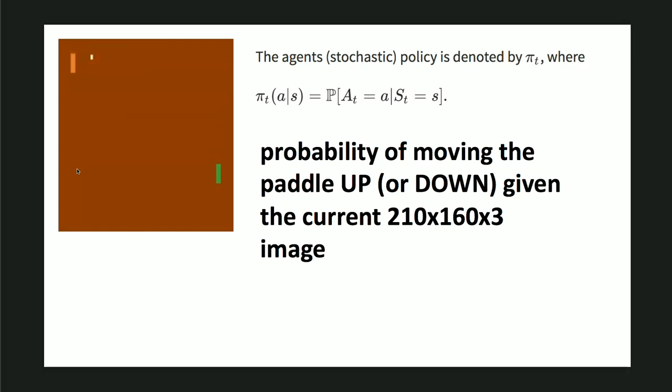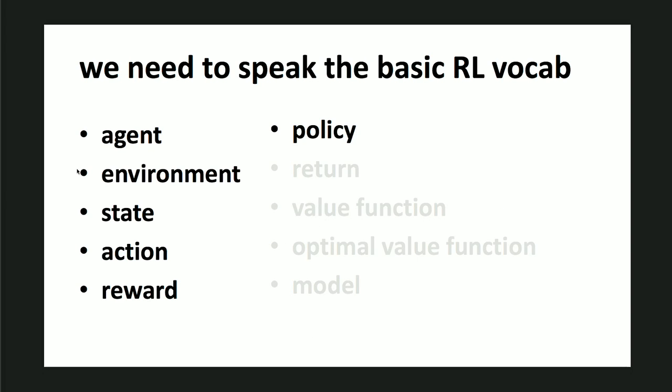In the Pong game, the policy is the probability of moving the paddle up or down - the probability that y equals one given the current 210 by 160 by 3 image. Essentially I'm trying to learn a function from these hundred thousand numbers to a probability saying whether I should go up or down. That's all the policy is. Now the question is: how do I learn this policy?